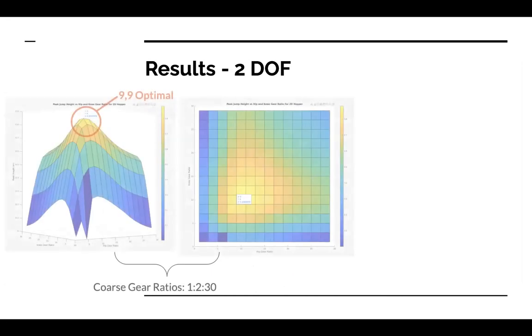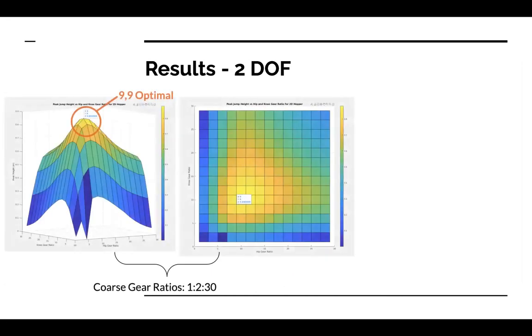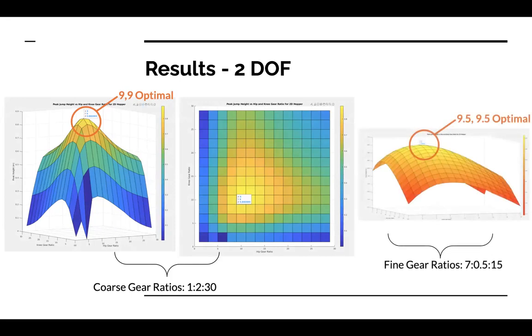Since the two degree of freedom case is much larger, we began with a coarse search over gear ratios in the range of 1 to 30 with a step size of 2. Once we found the optimal gear ratio to be 9 for both the hip and knee, we performed a finer analysis over the range of 7 to 15 with a step size of 0.5. Here we found the optimal ratio to be 9.5 for both the hip and knee.